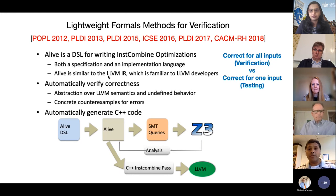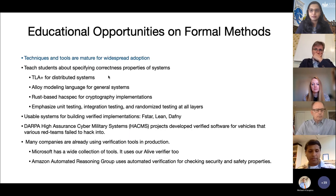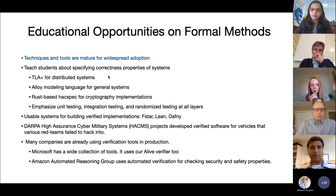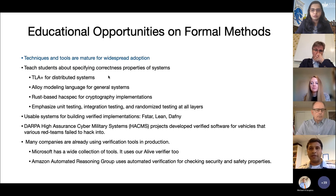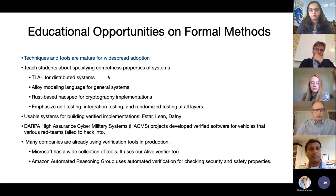Since we built Alive, it is now widely used by almost every company that uses LLVM and has prevented many incorrect optimizations from getting into the LLVM compiler. The key message: one way to check program safety, which is paramount for security, is to use formal verification. It used to be a niche area, but now there are mature tools and techniques available for widespread adoption. We need to educate and teach both students and the next generation of programmers to use them.